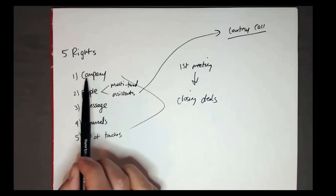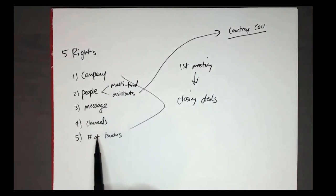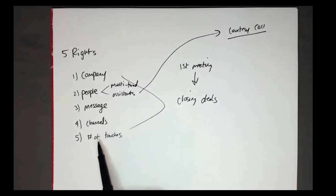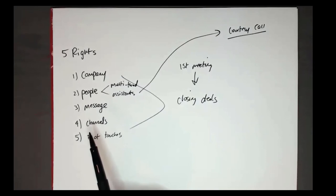Use the courtesy call technique: say you've been emailing so-and-so, they've been opening emails, and ask if there's a better way to reach them — an extension or anything. Ask the assistant for help rather than working around them. Then it usually comes back to one of these five things: is your message resonating, are you talking about the right problem, are you engaging on two or more channels, are you hitting 12-plus touches? We have people getting 20% response rates and 10% cold call pickup rates — people are picking up the phone and responding to emails.